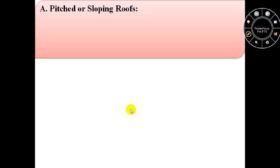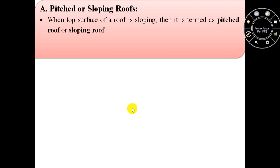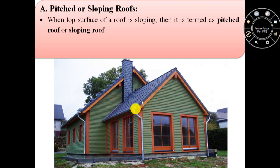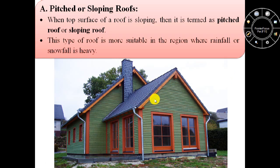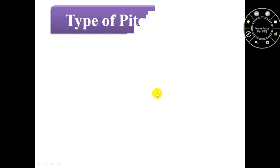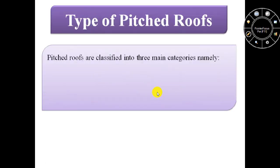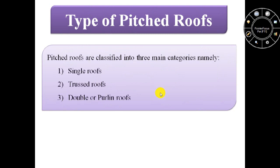Firstly we will discuss about pitch or sloping roofs. When the top surface of a roof is sloping, then it is known as pitch roof or sloping roof. This pitch roof is more suitable in the region where rainfall or snowfall is heavy. These pitch roofs are classified into three main categories: single roofs, truss roofs, and double or purlin roofs.